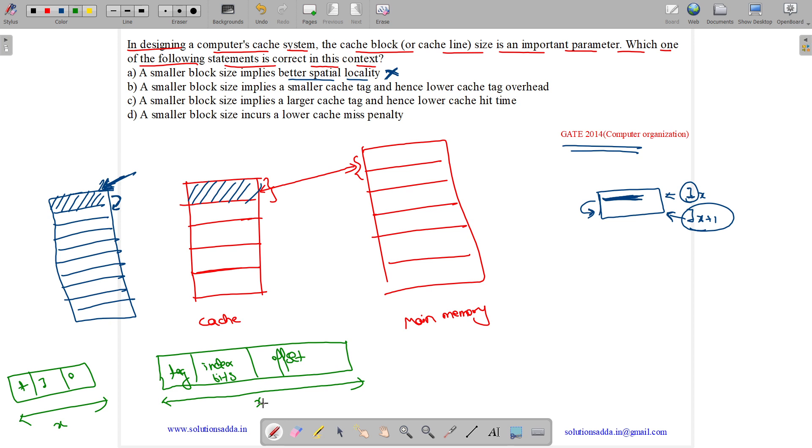If this is x, this would be x only. Now if we are reducing the block size, the number of blocks increases. Thus if number of blocks increase, we will need more bits. So index bit size increases and we need more bits to access a block. But here, we need to access less amount of data.